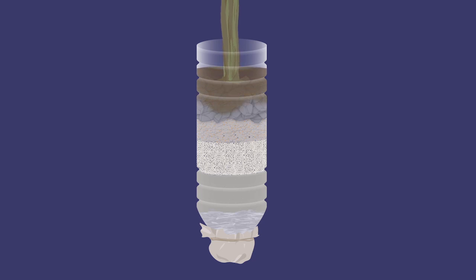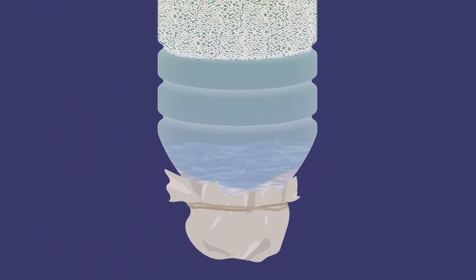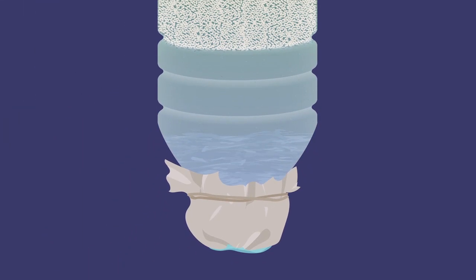Filters start out with really big holes to remove the big stuff. After that, the water will go through smaller and smaller holes to remove the smaller stuff. When we look at this filter, the holes are the spaces in between the different materials making up the layers. These are called pores, and the bigger the pores are, the more stuff there is that can get through it.